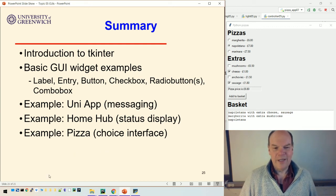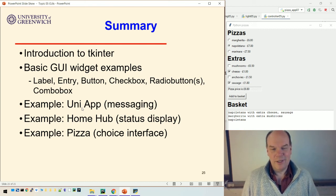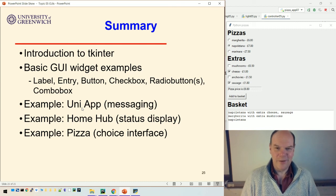And then we saw the three examples, the UniApp, which is the simplest one where we can just send a message to all users, the Home Hub, which just displays the status but isn't controllable, and the Pizza, which is the more advanced example where we've got an interface where we can choose things using the radio buttons and the check boxes and a button to add things to the basket. I hope you found that helpful and you now want to get out there and try to build yourself a GUI.